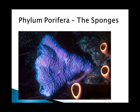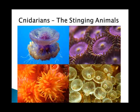Now we're going to look at the stinging animals, the Cnidaria. These guys have simple tissues, but still no organs. That's their big evolutionary milestone — they've developed tissues.